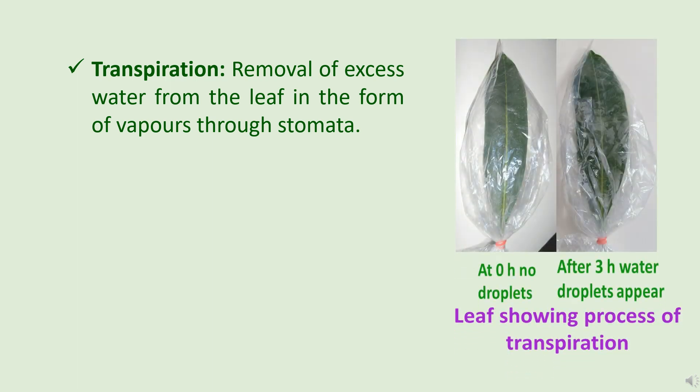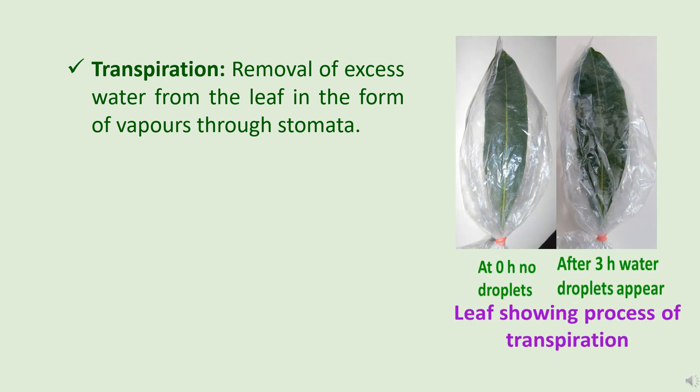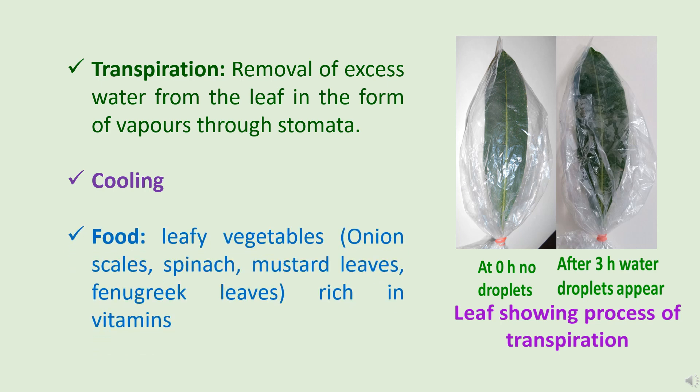To demonstrate transpiration, an experiment was set up in which plant leaves were covered with a polythene bag. After three hours, small droplets were observed on the inner surface of the polythene bag — this is water released by the leaves through the stomata by the process of transpiration. This transpiration process helps in the cooling of a plant and its surroundings. Some leaves are also used as a food source because they are rich in vitamins and minerals — examples are leafy vegetables like onion scales, spinach, mustard leaves, and fenugreek leaves.